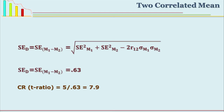Use the formula for correlated means. Substitute the values and we get the SE of difference as 0.63. Now to find out the critical ratio: the formula is D divided by SE of D, that is difference between two means divided by SE of difference. We have the values: 5 divided by 0.63, which comes to about 7.9. So the critical ratio is 7.9.